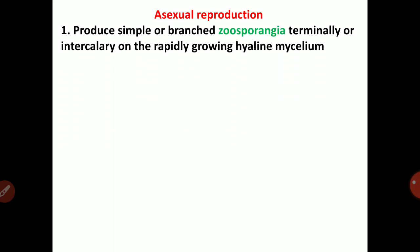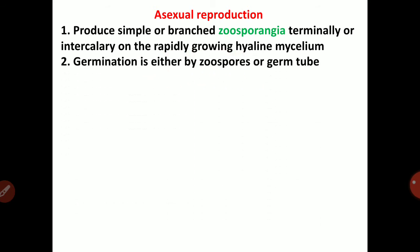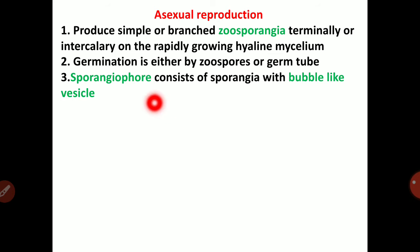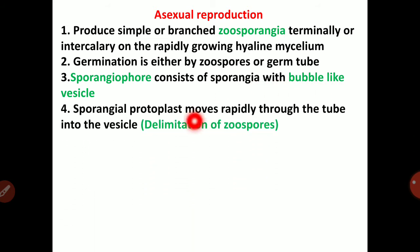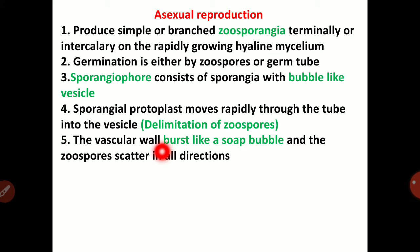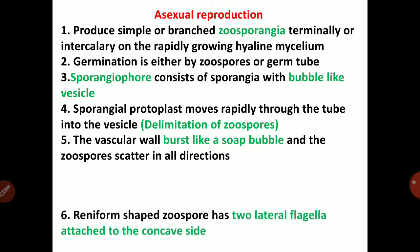In asexual reproduction, simple or branched zoosporangia are produced terminally or intercalary on the rapidly growing hyaline mycelium. Germination is either by zoospores or germ tube. Zoospore release involves sporangia forming a bubble-like vesicle. The sporangial protoplast moves rapidly through the tube into the vesicle. The vesicle wall bursts like a soap bubble and the zoospores scatter in all directions.